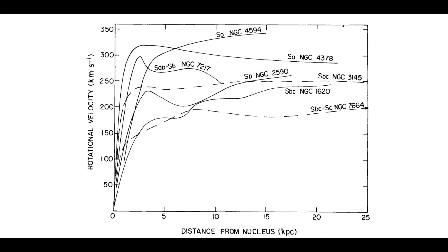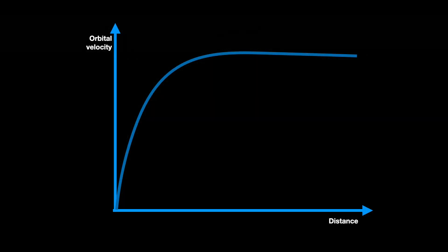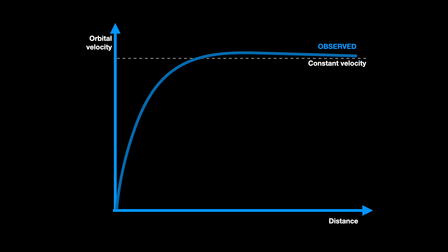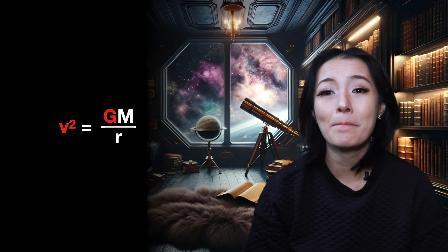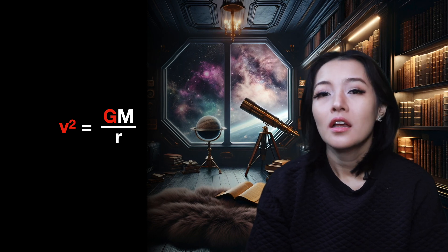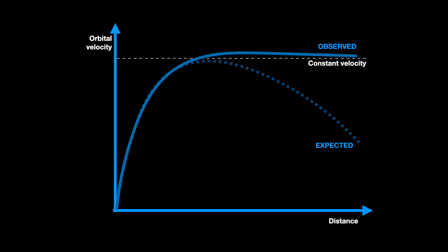But that's not what Vera Rubin saw. When she plotted the velocity of stars in the galaxy against their distance to the center, at the very outskirts, the velocity is constant. Now, if velocity is constant and G is also constant, but R is increasing, what does this tell us about M? Remember, M is the mass enclosed within the radius. Well, M is proportional to R — so the further out we go from the galaxy, the more mass there is.